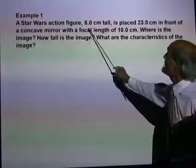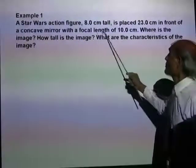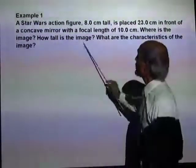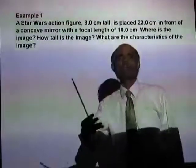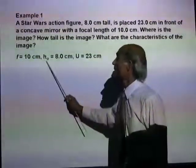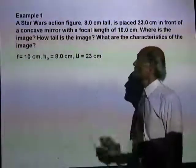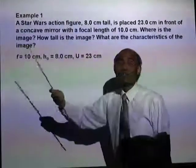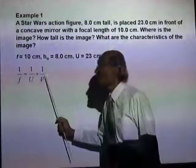A Star Wars action figure 8 cm tall is placed 23 cm in front of a concave mirror with a focal length of 10 cm. Where is the image, and how tall is the image? The focal length is 10 cm, the height of the object is 8 cm, and the object distance is 23 cm. We can use the mirror formula — 1 over F equals 1 over U plus 1 over V — to calculate V.